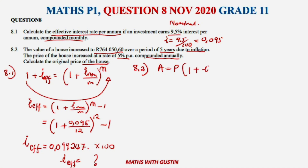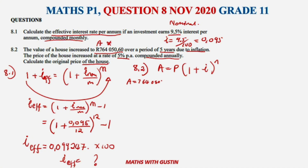Since it's a house, we use the compound interest formula: A equals P times (1 plus i) to the power of n. The value it increased to is our A. We don't know the starting price P, which is what we're solving for. The interest rate i is 5%, and dividing by 100 gives us 0.05.